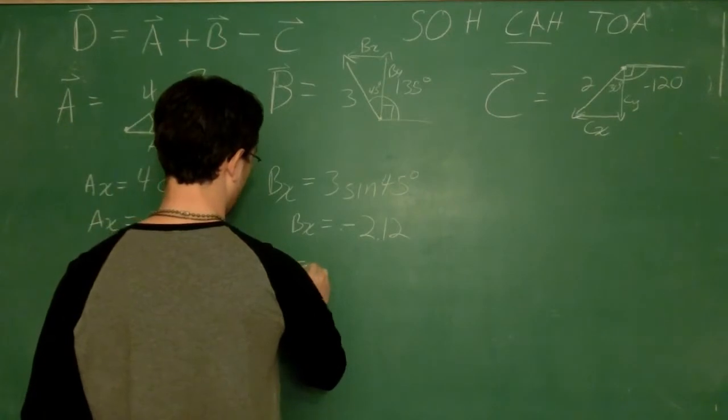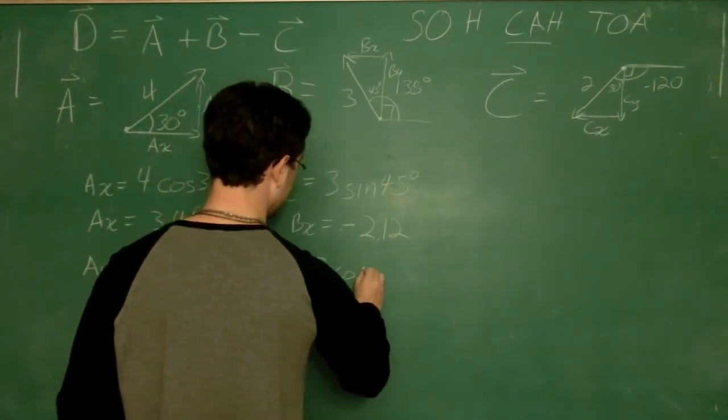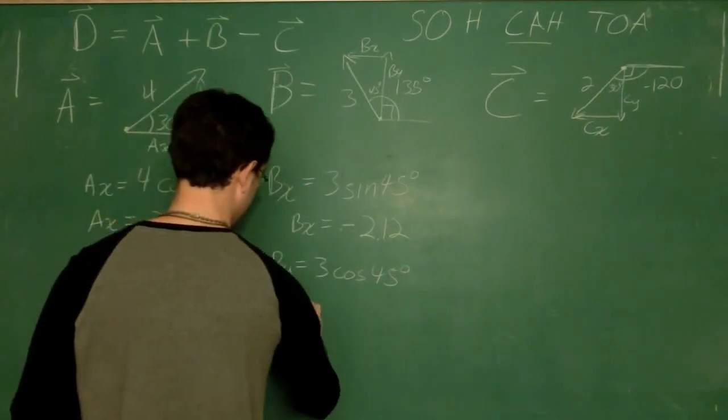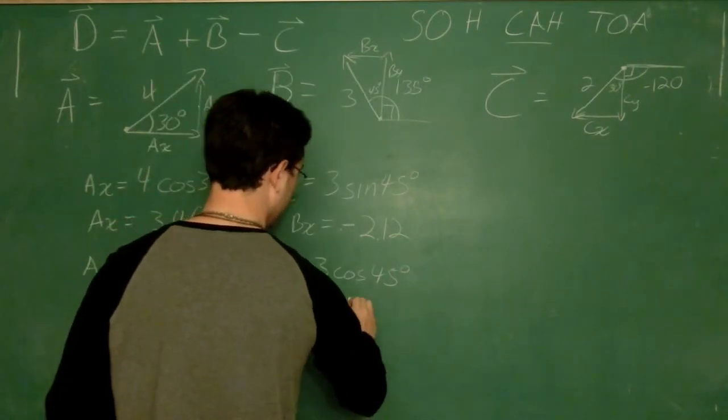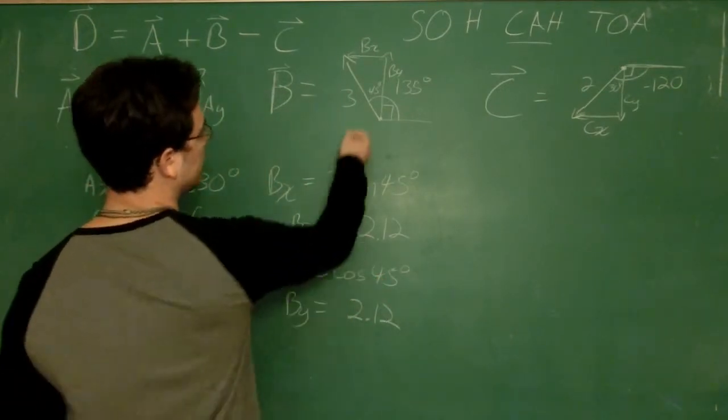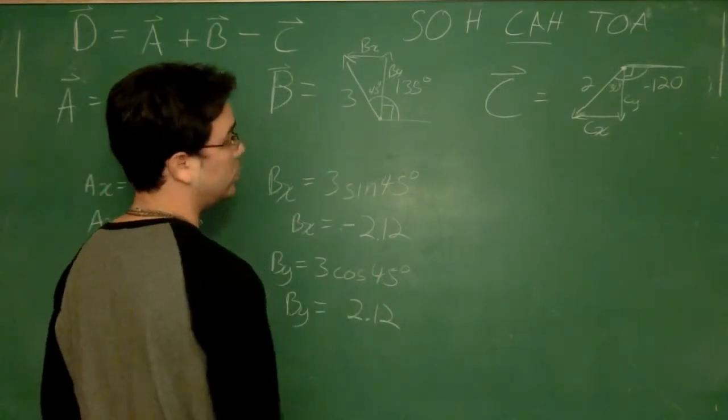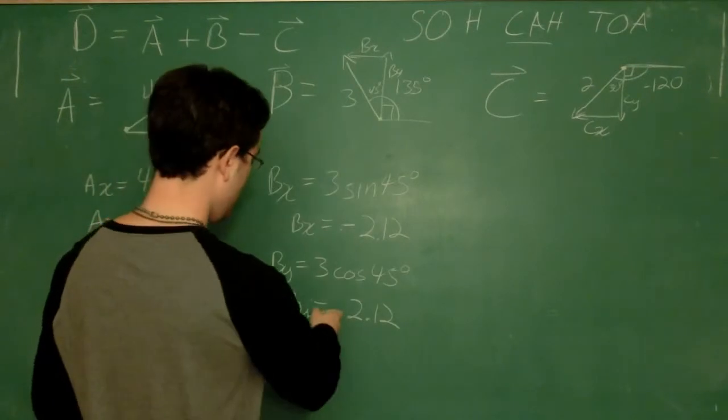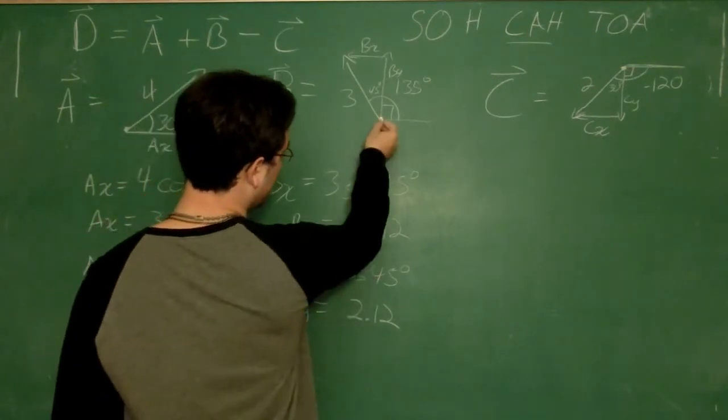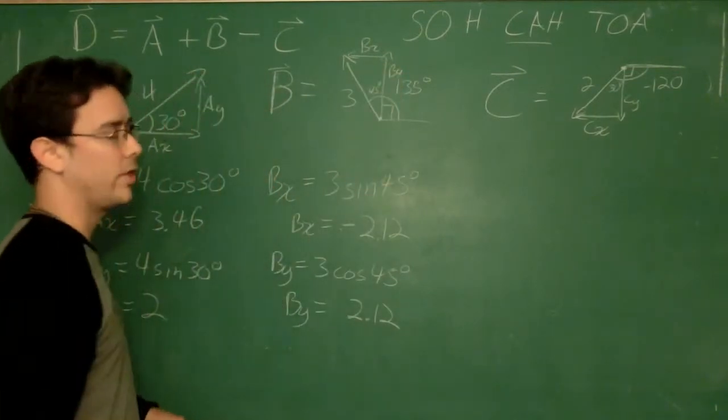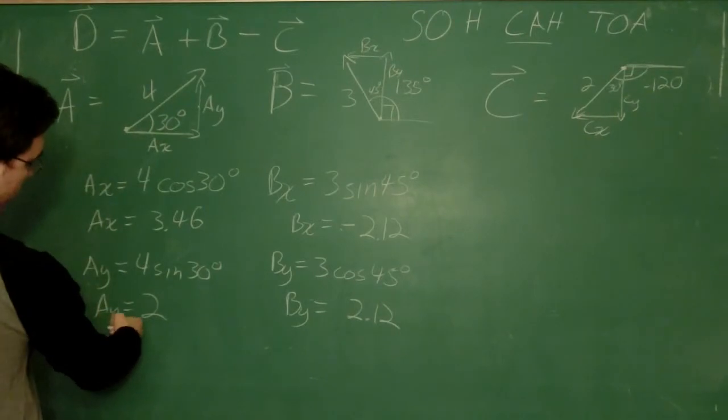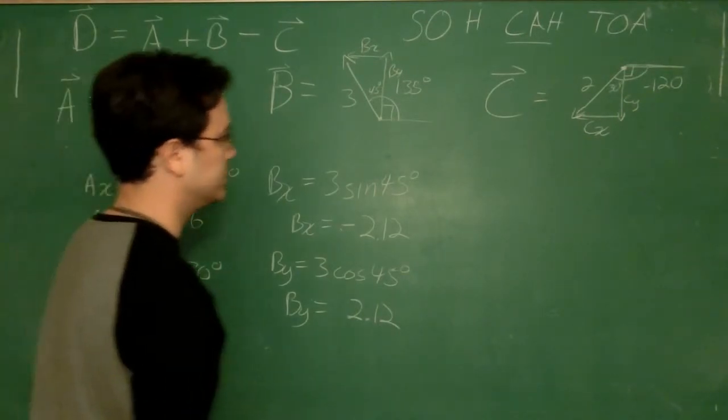So now when I solve my B sub y, I'll find that it is 3 cosine 45 degrees. And I'll find that B sub y equals 2.12 as well, because 45 degrees tells me that that's actually an isosceles triangle. I don't draw things to scale. And so now I need to double check, is it positive or negative? Well, it's pointed up. So I'm going to call that positive. That's what I did over here in A as well. A sub y, my y component, it points up, so it's going to be positive.